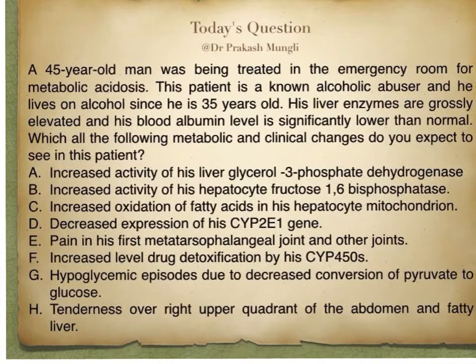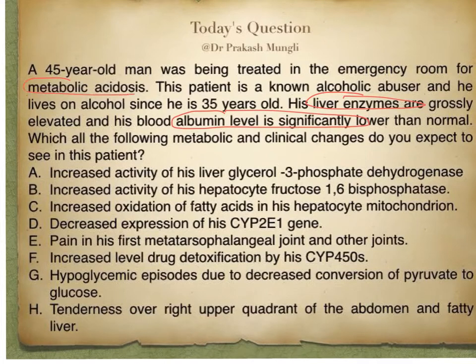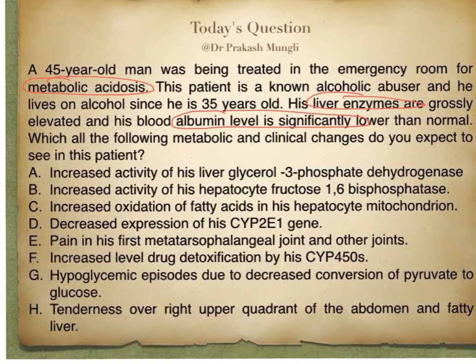Looking at this case, it is clear that this person is a chronic alcoholic because he has been taking alcohol for 10 years. His liver enzymes are grossly elevated and his blood albumin level is significantly lower than normal, and now he is in metabolic acidosis. The question asks which metabolic and clinical changes you expect to see — basically, what metabolic changes and clinical signs are present in chronic alcoholics.